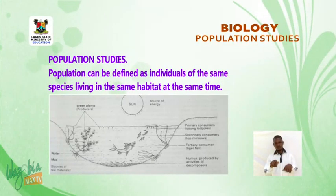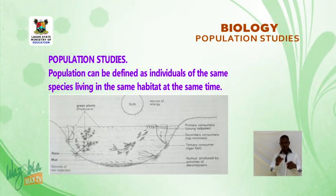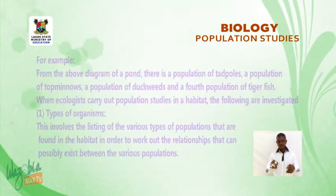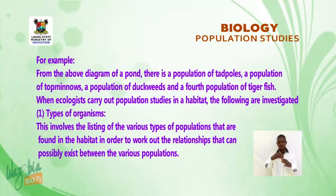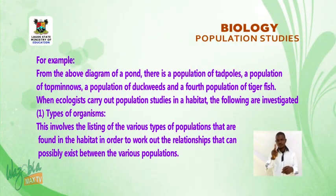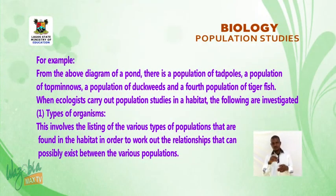Population can be defined as individuals of the same species living in the same habitat at the same time. For example, from a diagram of a pond, there is a population of tadpoles, a population of top minnows, a population of duckweeds, and a population of tigerfish.